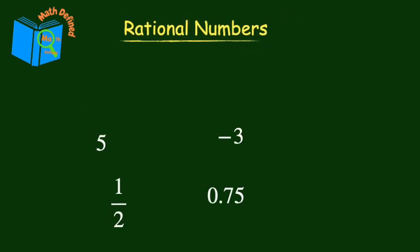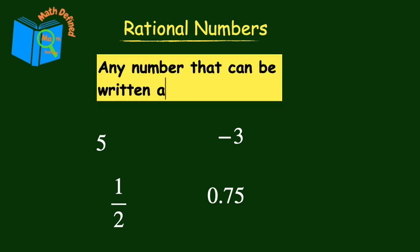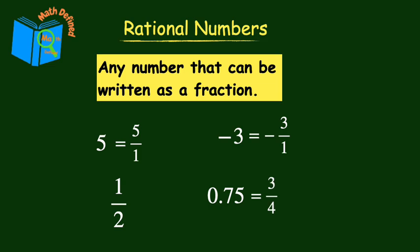First, let's quickly define what rational numbers are. A rational number is any number that can be written as a fraction. This includes whole numbers, integers, fractions, and decimals.